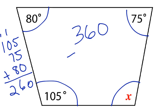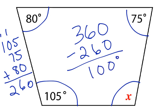So, then we can just subtract 260 from 360, which would give us 100 degrees. So, x equals 100 degrees.